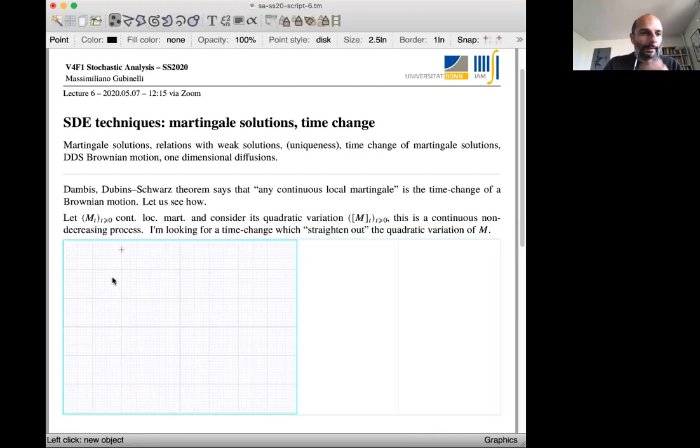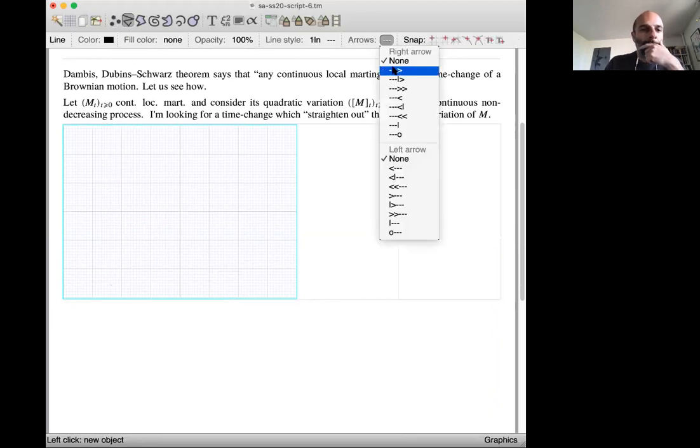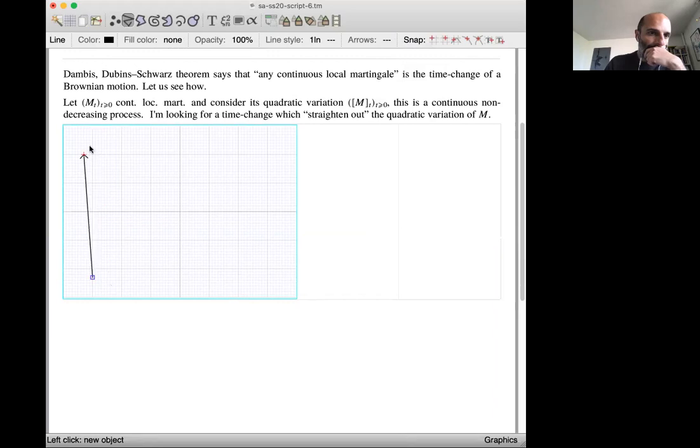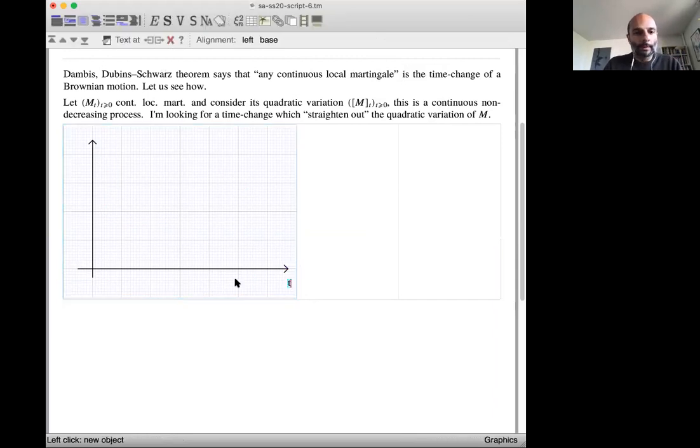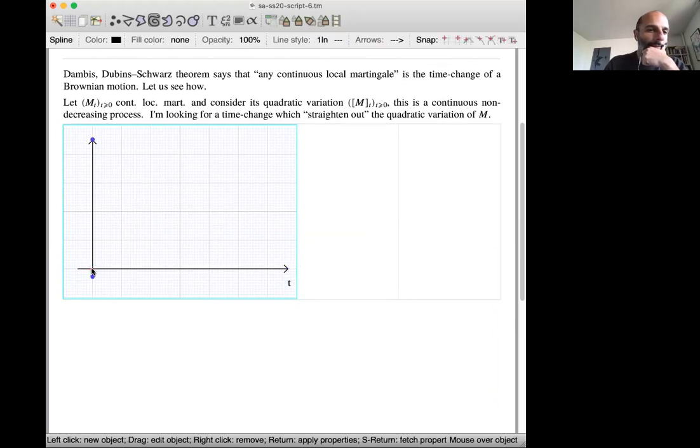How does it look like? Let's see. We need to make a quadratic variation. This is time, and then you want, how does it look like quadratic variation? Well, it starts from zero.